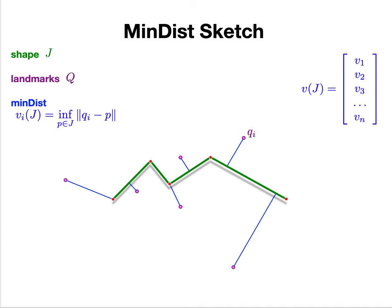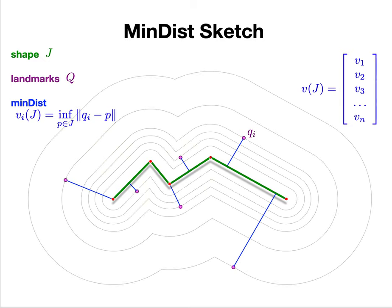I do this for all the landmarks. I can label and order them from 1 to n, and I get n of these positive values. I get this n-dimensional vector - this is my sketch of the shape. This is the MinDist sketch. Any shape here, I can take these fixed landmark points and generate this vectorized sketch.